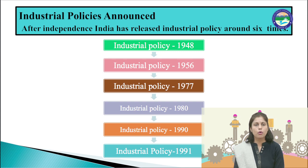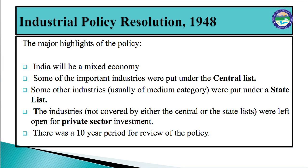The first industrial policy announced was the Industrial Policy Resolution 1948. The major highlights were: India will be a mixed economy, meaning both public and private sector will participate equally for the development of the economy. Second, some important industries were put under the central list such as coal, power, railways, civil aviation, arms and ammunition, and defense. Third, some other industries of medium category were put under a state list such as paper, medicines, textiles, cycles, rickshaws, and two-wheelers. Fourth, the rest of the industries not covered by either list were left open for private sector investment, many with the provision of compulsory licensing. Fifth, there was a 10-year period for review of the policy.